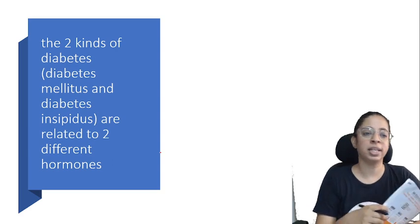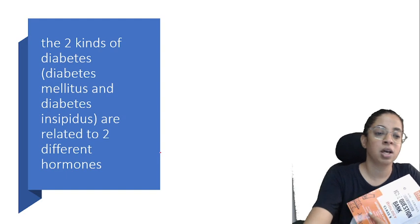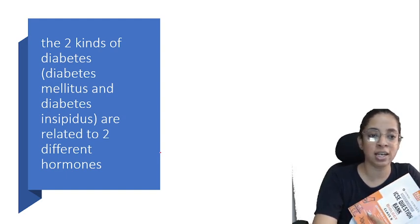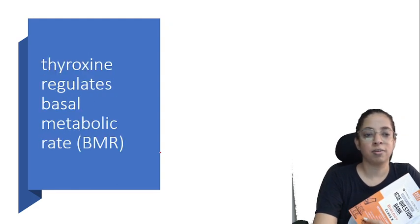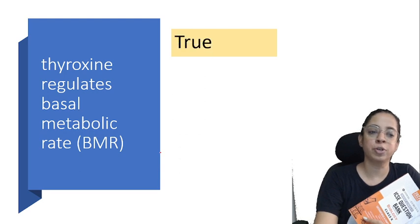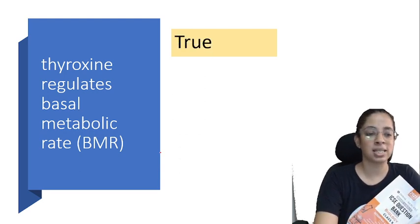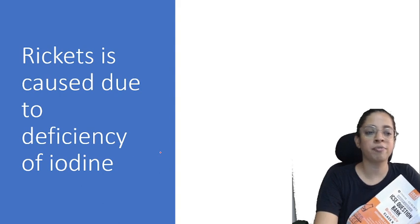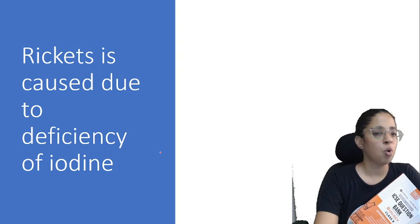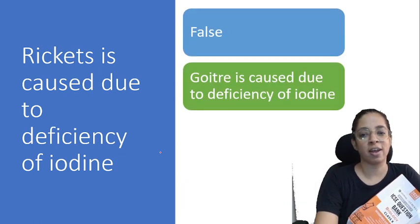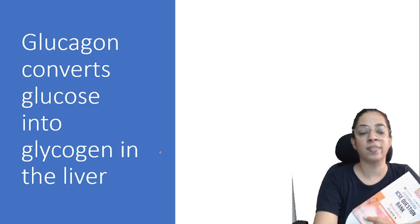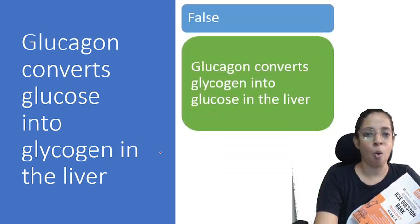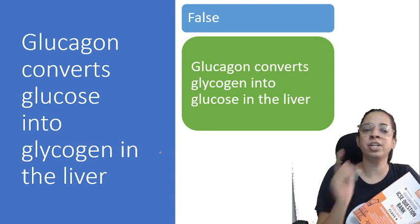The two kinds of diabetes — diabetes mellitus and diabetes insipidus — are related to two different hormones — yes, that is correct. Thyroxine regulates the basal metabolic rate — that is also true. Rickets is caused due to deficiency of iodine — false; goitre is caused due to deficiency of iodine. Glucagon converts glucose into glycogen in the liver — false; glucagon converts glycogen into glucose.